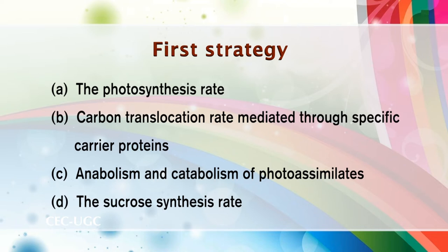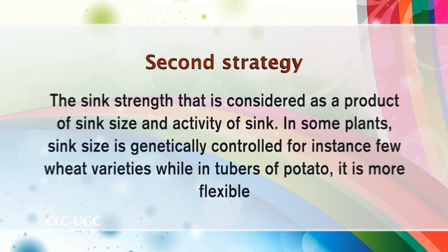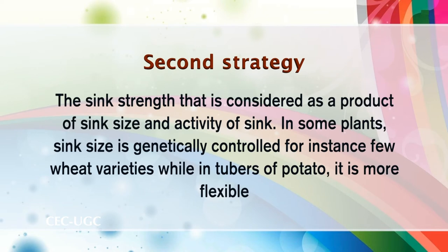The second strategy is to enhance the sink strength, considered as a product of sink size and activity of the sink. In some plants, sink size is genetically controlled — for instance, in certain wheat varieties — while in tubers of potato it is more flexible.